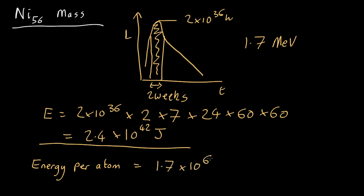10 to the 6 is the mega, electron volts times electron volts which is 1.6 by 10 to the minus 19 joules, so that comes out as 2.7 by 10 to the minus 13 joules.